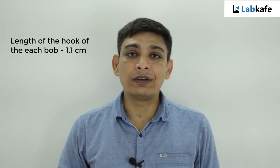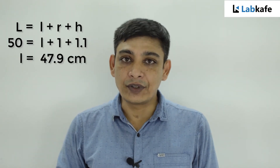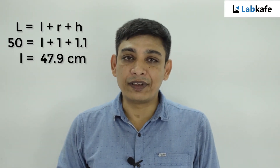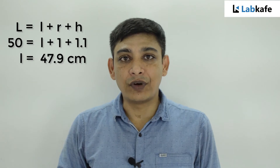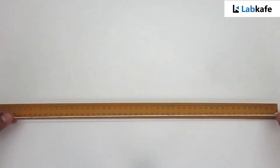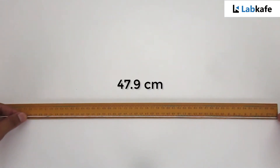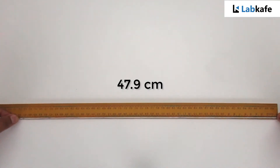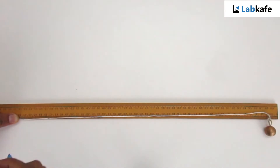By using a meter scale, I have already measured the length of the hook separately. The measured length of the hook of each of the bobs is 1.1 cm, and the radius of each bob is 0.95 cm. Therefore, to make the effective length of the pendulum 50 cm, I have to take the length of the thread as 47.9 cm, using the formula L = l + r + H. I measure the length of the thread as 47.9 cm and mark this point with ink.